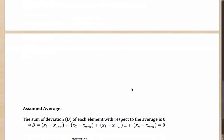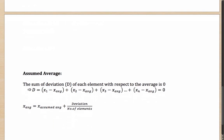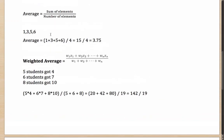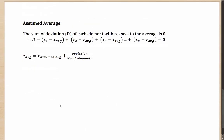Another method for calculating averages is the assumed average method. But before that, you should first understand deviation. What exactly is a deviation? Let's look at the earlier example again: 1, 3, 5, and 6 were the values.